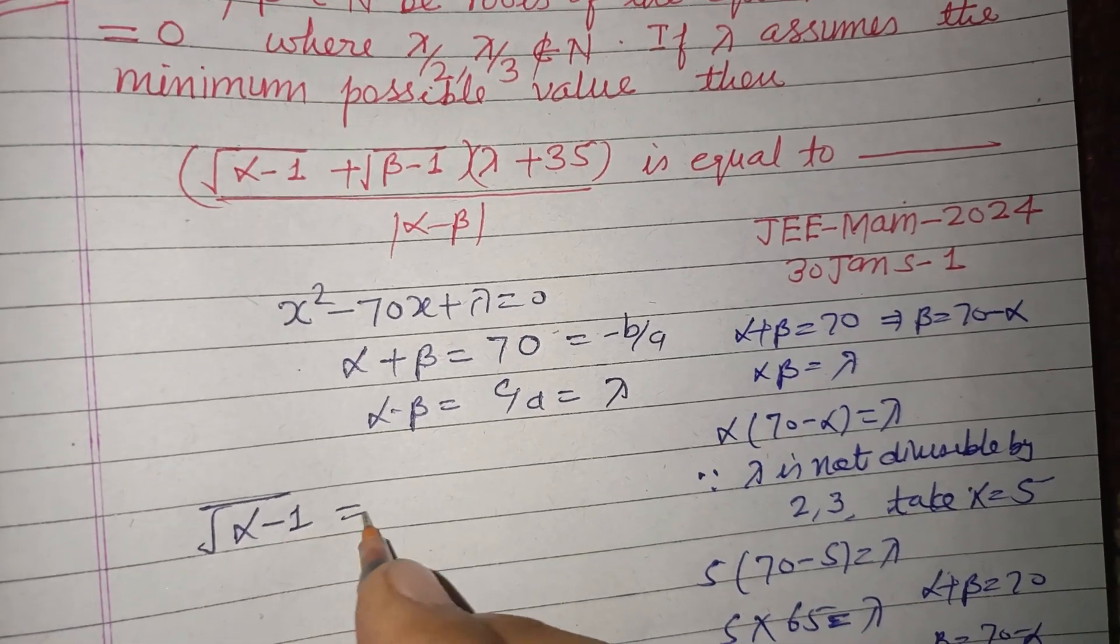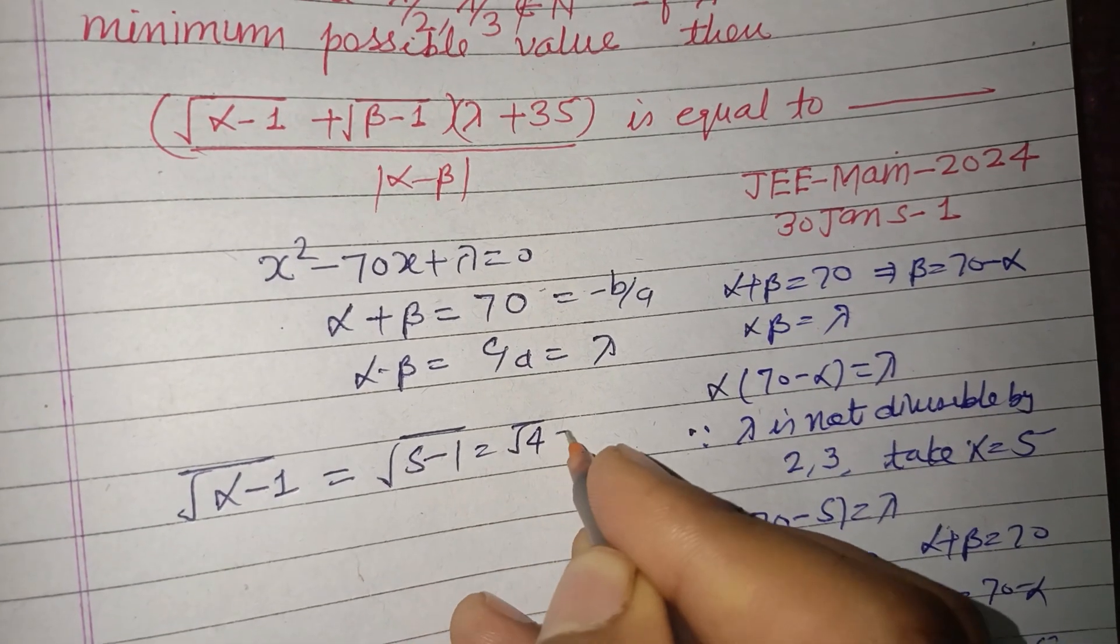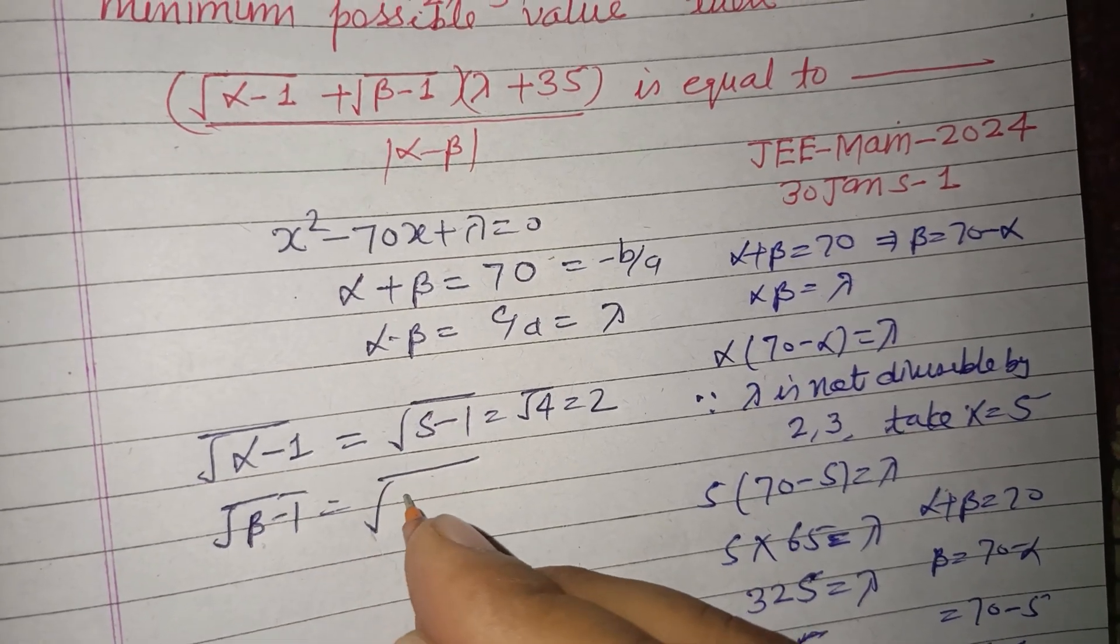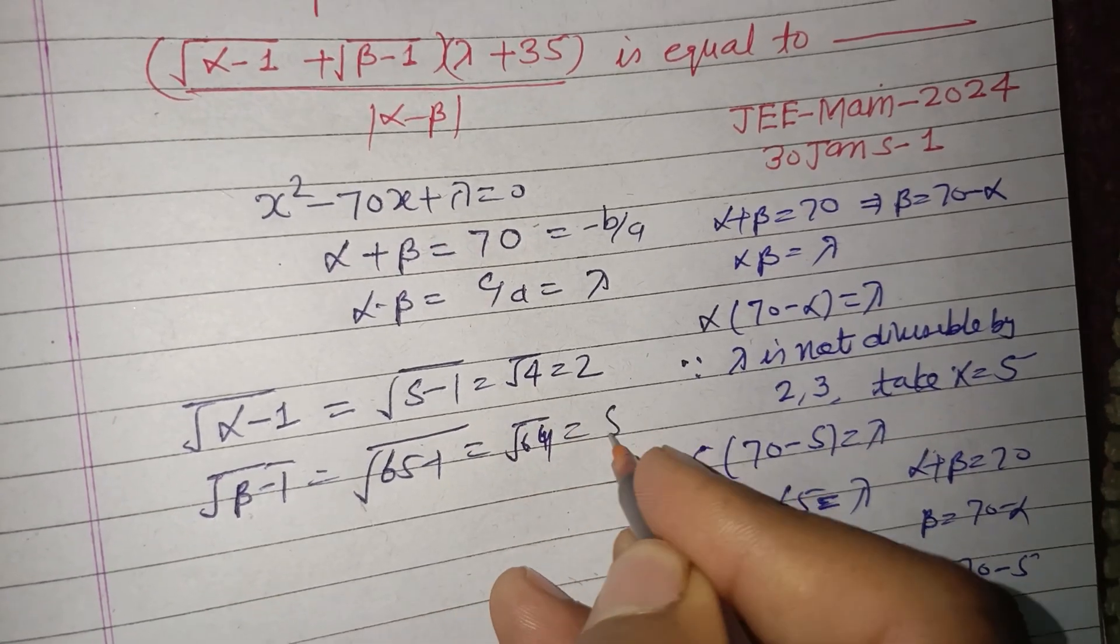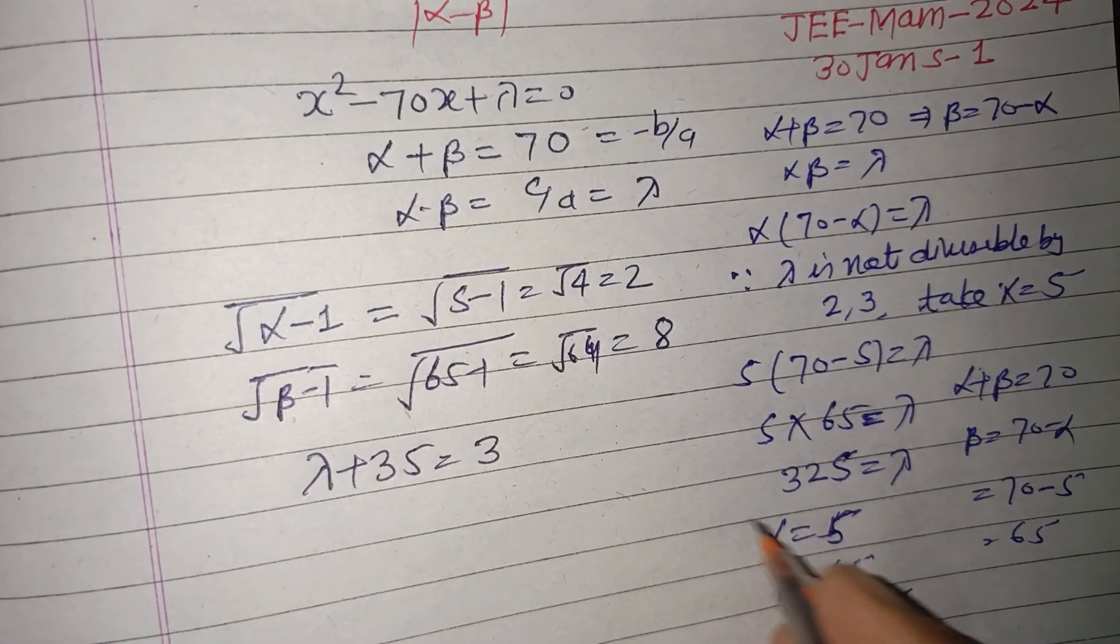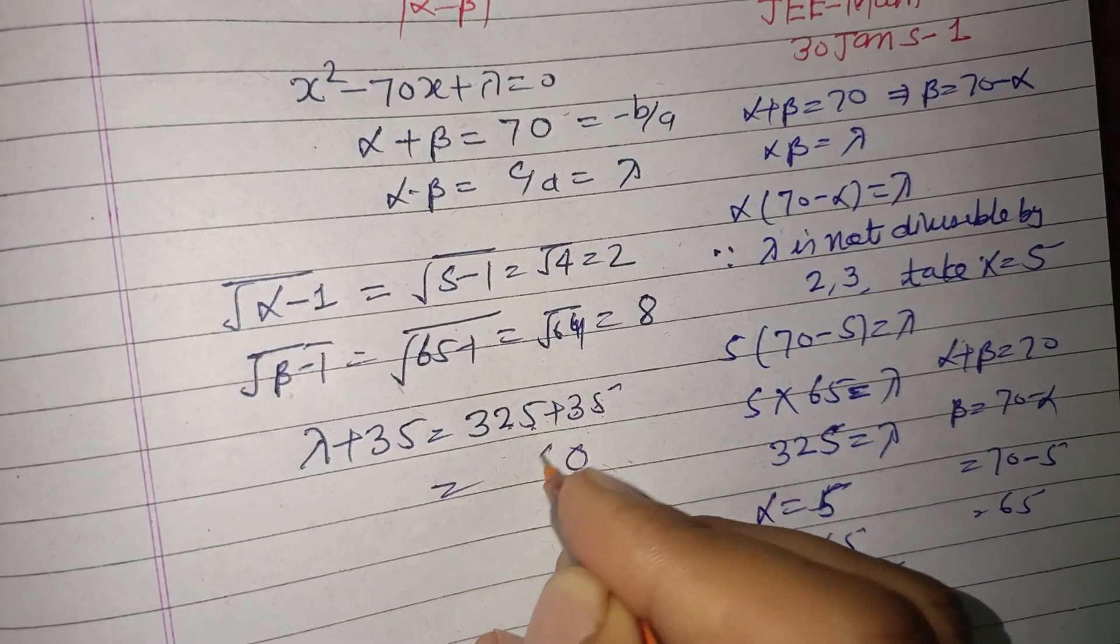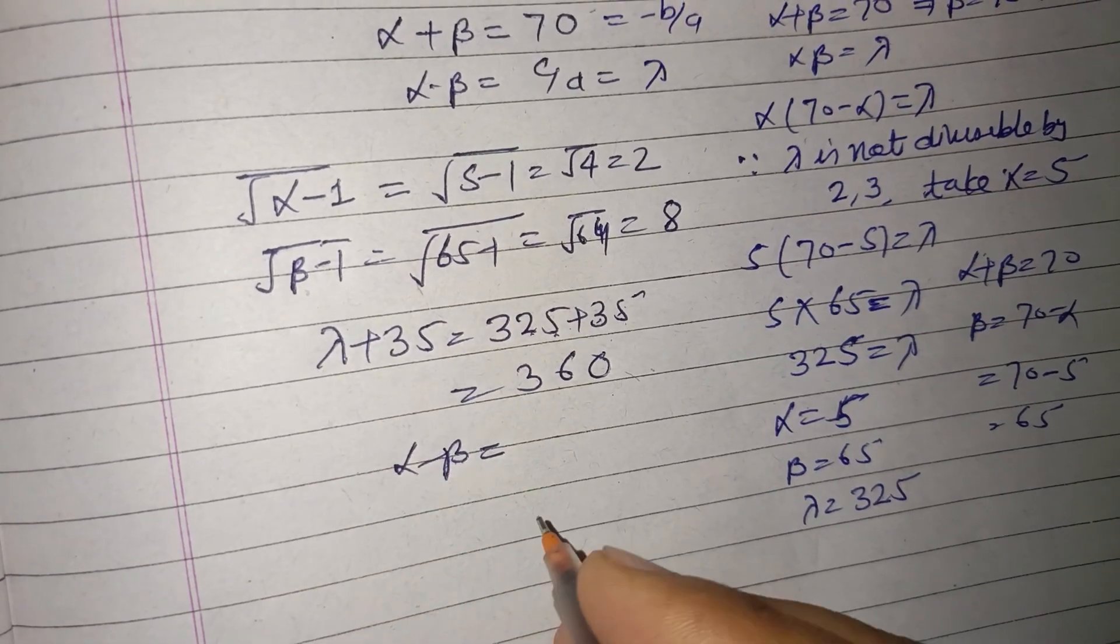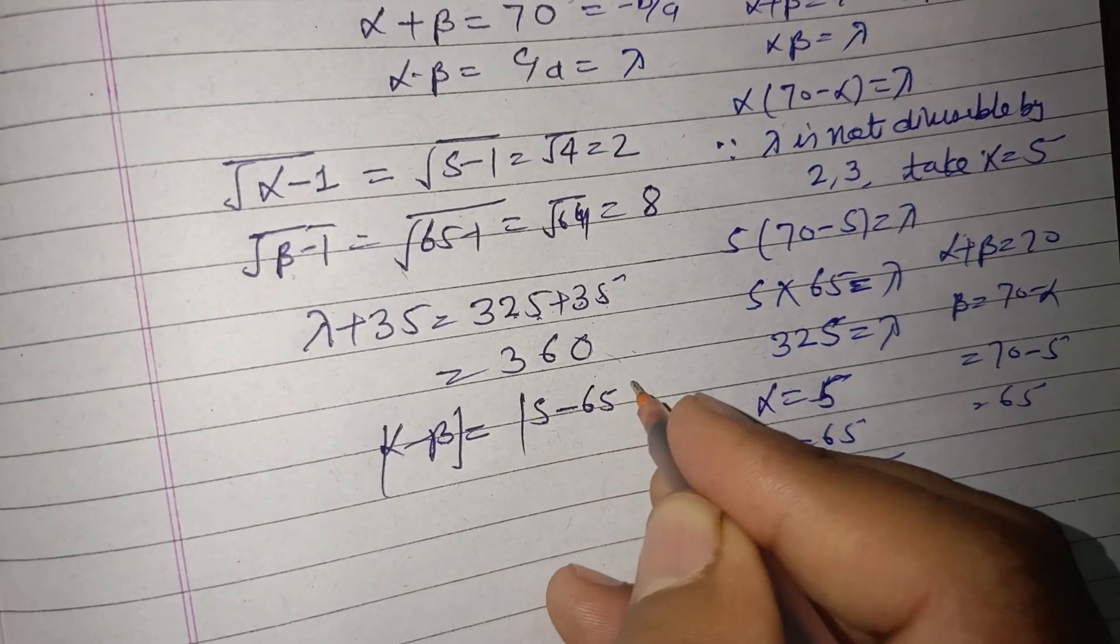The question asks to find √(alpha - 1), which is √(5 - 1) = √4 = 2. And √(beta - 1) = √(65 - 1) = √64 = 8. And lambda + 35 = 325 + 35 = 360. And |alpha - beta| = |5 - 65| = 60.